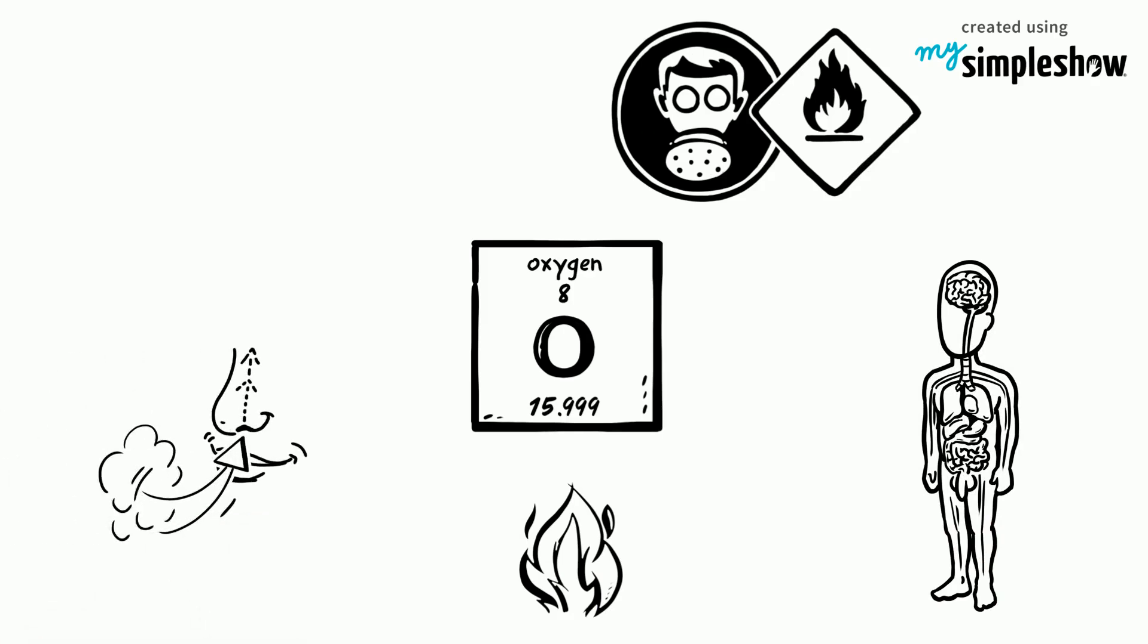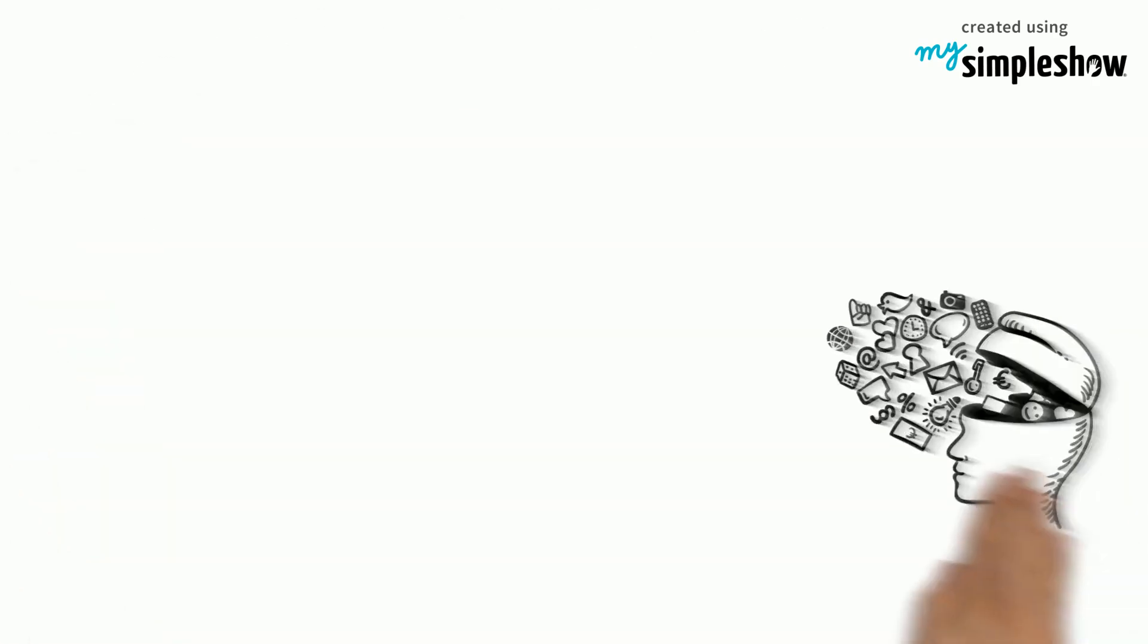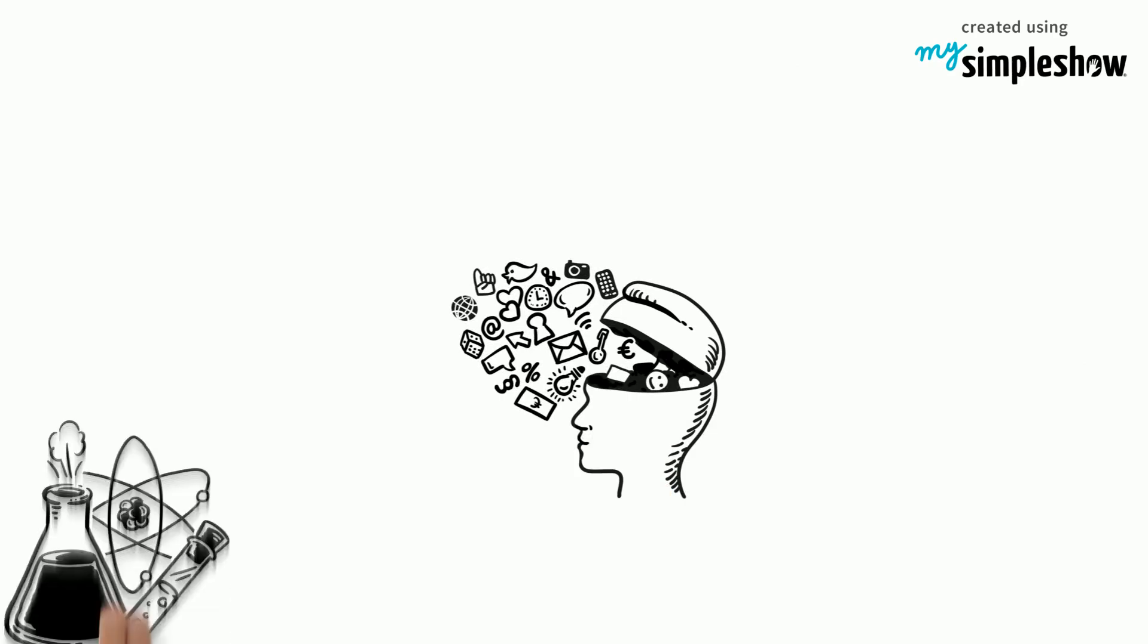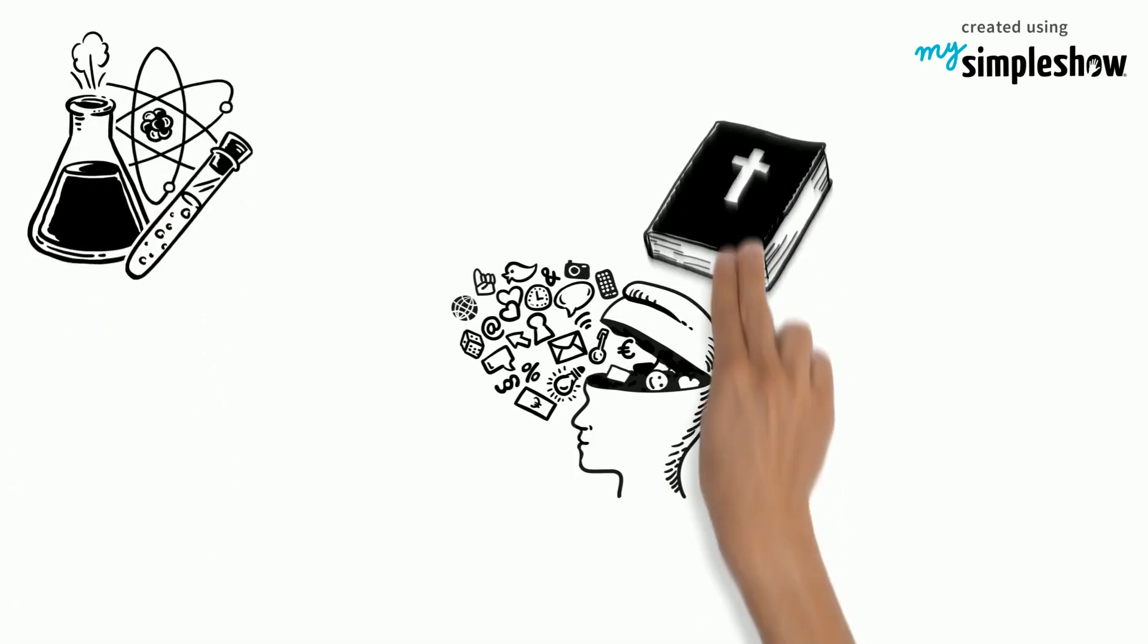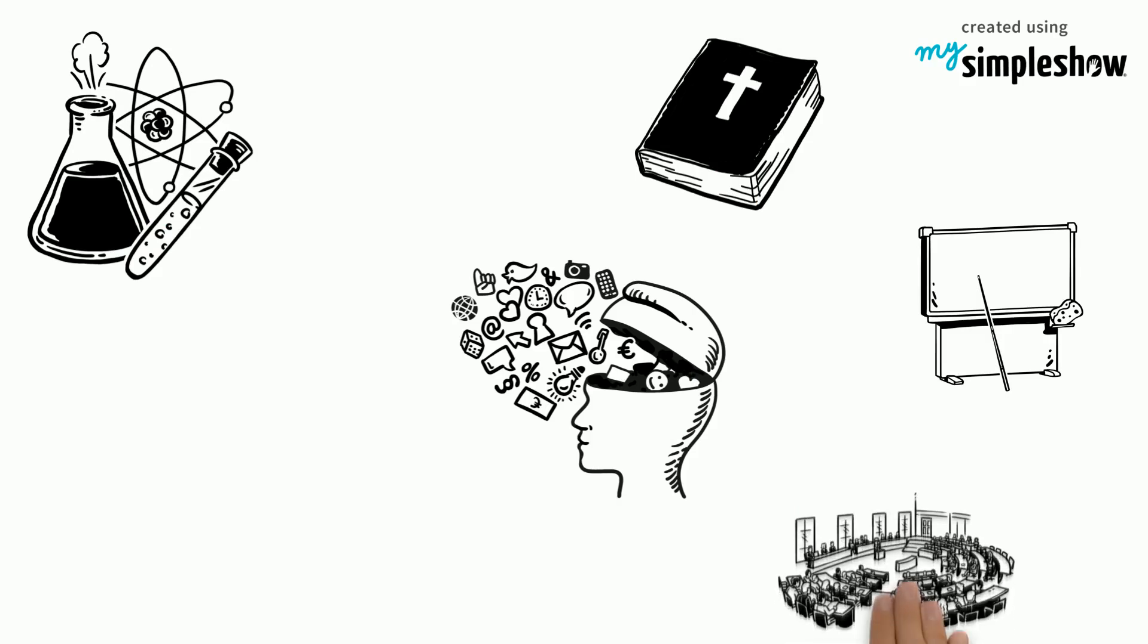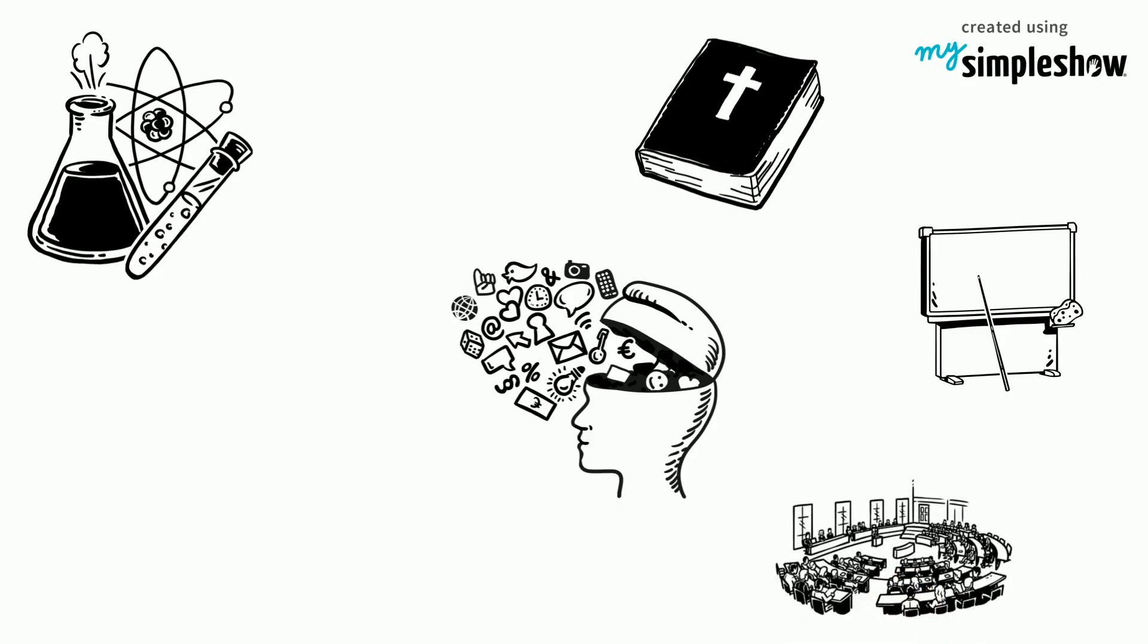While we need oxygen to survive, too much of it can kill us. Priestley's knowledge exceeded science and physics and reached across subjects and fields including theology, teaching and politics. One day his knowledge of chemistry led us to the path of one of the essentials to the existence of life, oxygen.